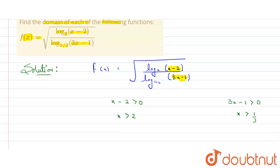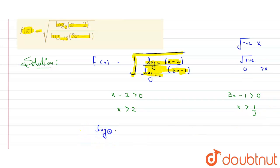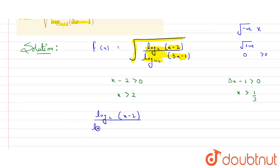Now we also have a square root here. The value inside the square root must be at least 0 or greater than 0, because we cannot have negative values inside a root. So the expression log base 2 of (x minus 2) divided by log base one-half of (3x minus 1) must be greater than or equal to 0.